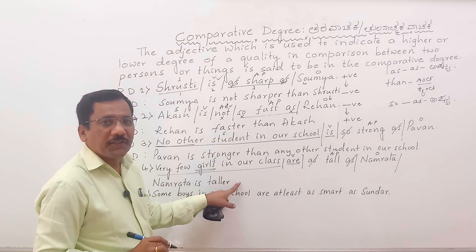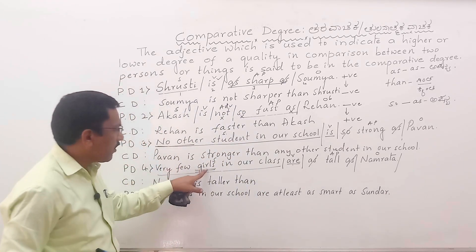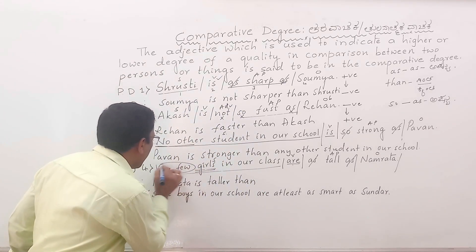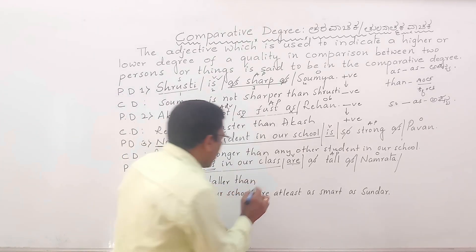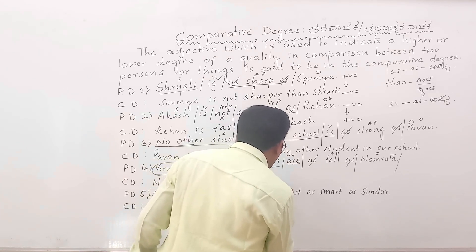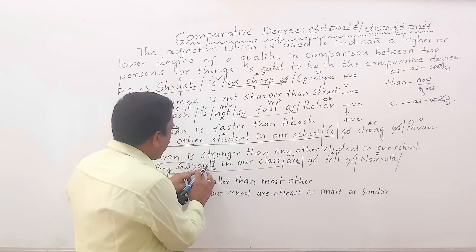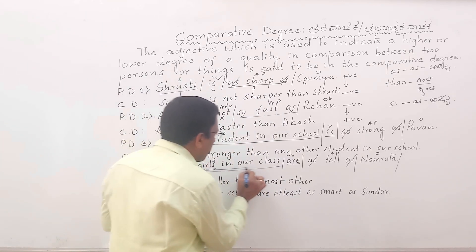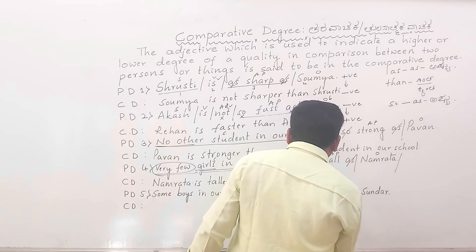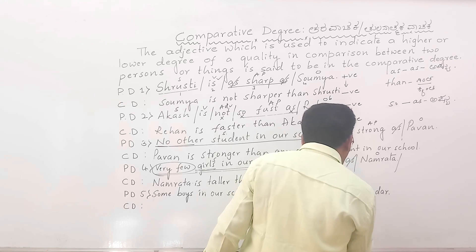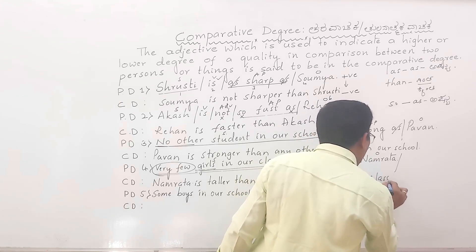After writing 'taller', we write 'than'. After 'than', we look at the beginning of the positive degree sentence — 'very few' is there. When the positive degree begins with 'very few', we write 'most other' instead. 'Most other' is followed by the plural noun and remaining words: most other girls in our class. So the final sentence is: Namrata is taller than most other girls in our class.